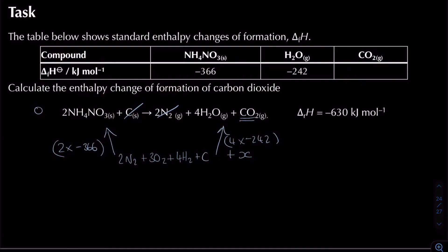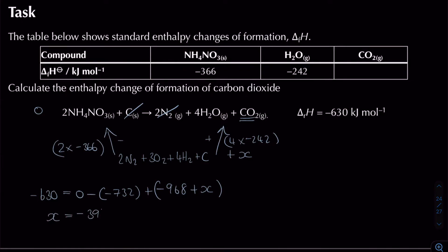Setting up: the enthalpy change of reaction equals minus 630, which equals zero, minus minus 732 (subtracting because going against the arrow), plus minus 968 plus x (adding because going along the arrow). Rearranging gives x = minus 394 kJ/mol, which is the standard enthalpy change of formation of CO₂.